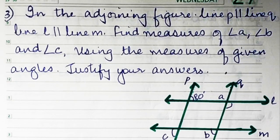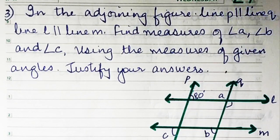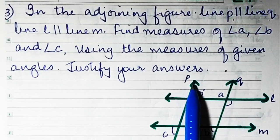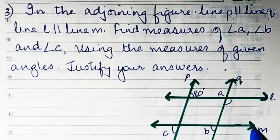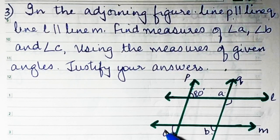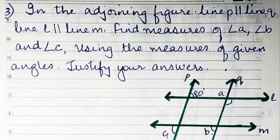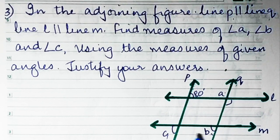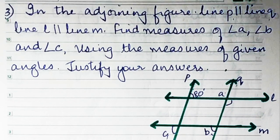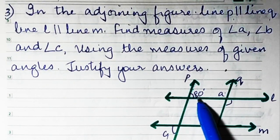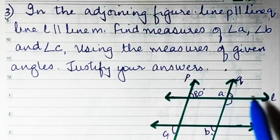In sum number 3, p is parallel to q and l is parallel to m. We need to find angles a, b, and c using the given angle measures. If we find c, we can find b because they are corresponding angles. Here c corresponds to the 80° angle, so c is going to be 80°. Let's label this auxiliary angle as d.